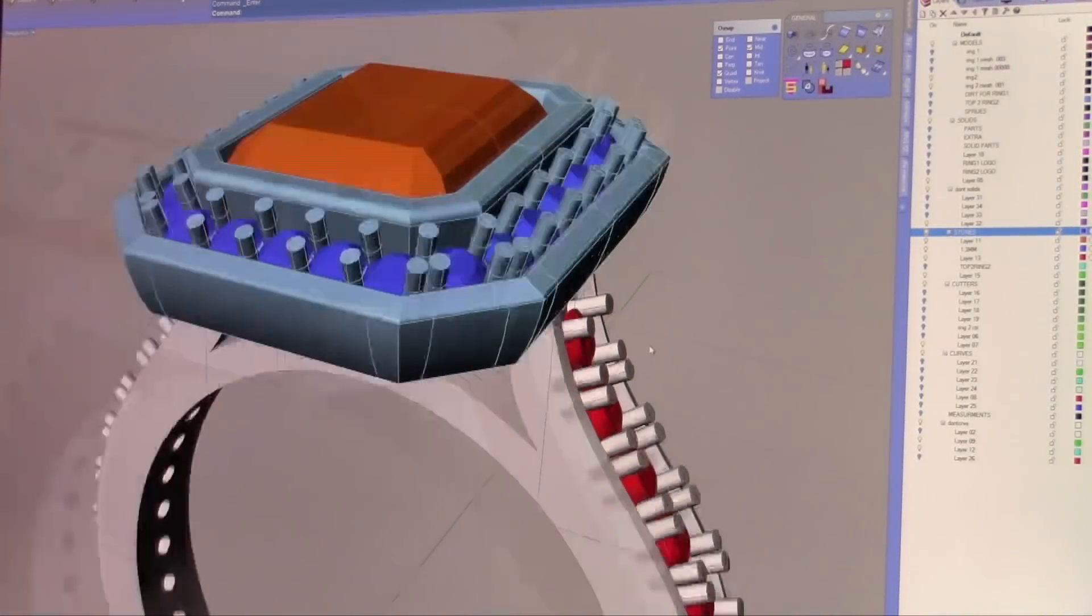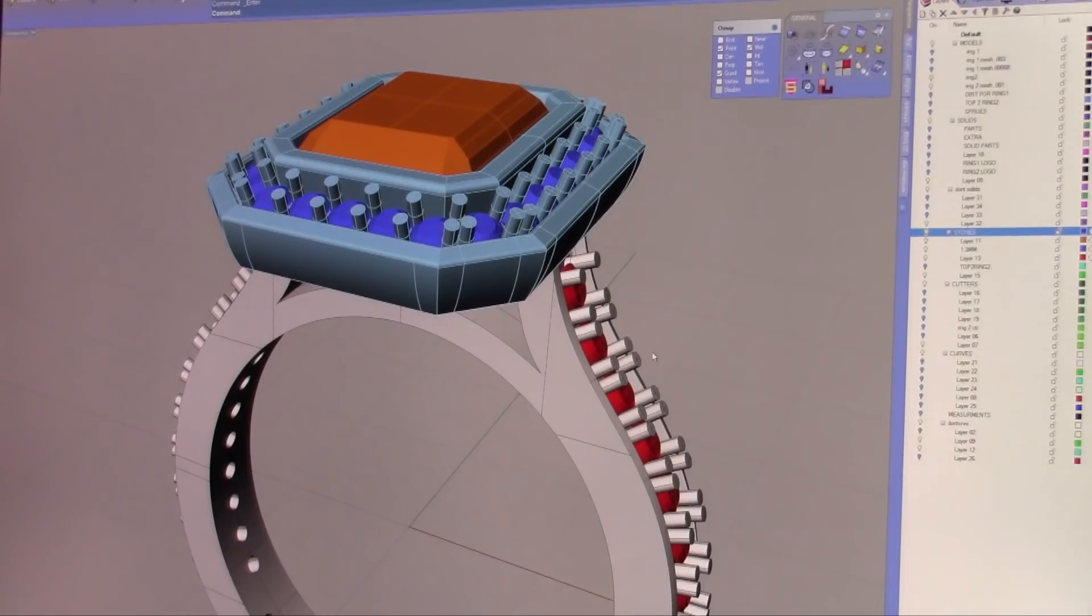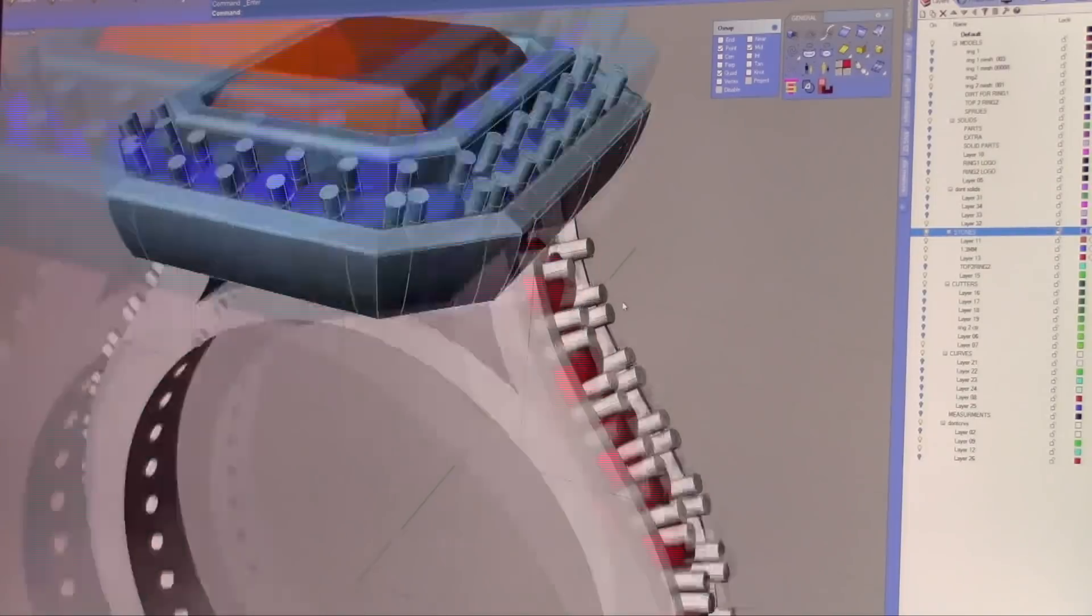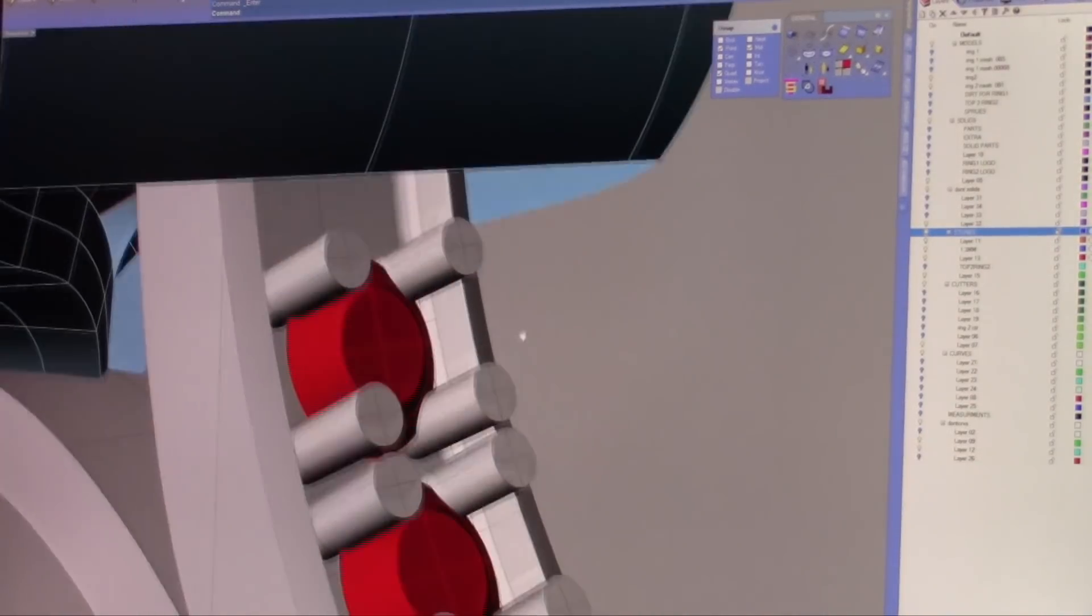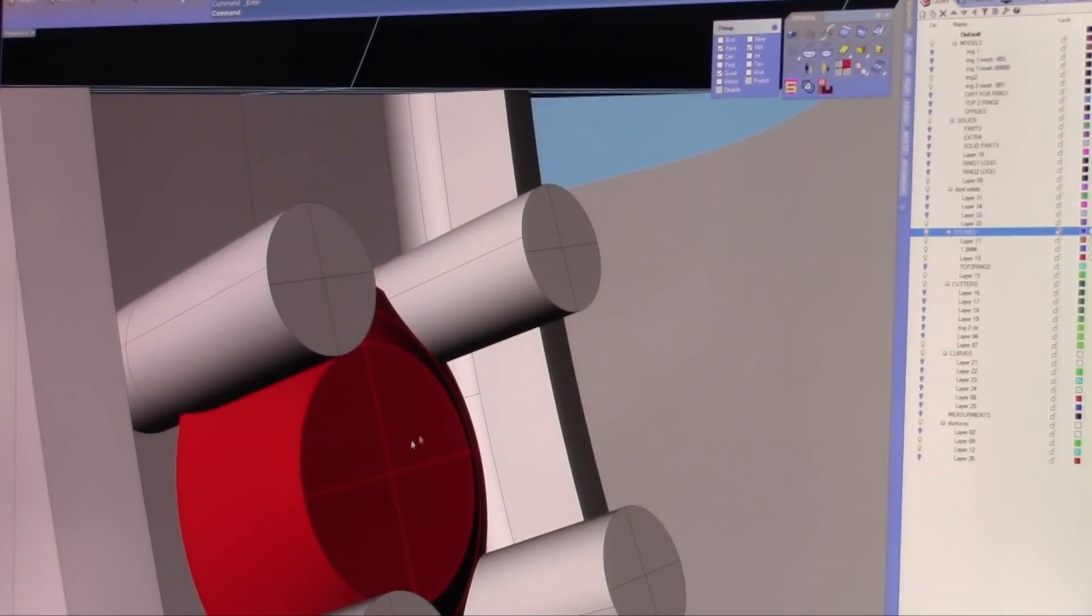On the screen, on a CAD screen, everything looks nice and big, but that doesn't mean that it's built to be able to withstand the building process and especially not the casting process. So if we take a measurement on one of these prongs, we're going to zoom in on the prong here holding this particular stone. We're going to do a radius and the radius on this stone is 0.225 or the diameter is not even a half a millimeter.